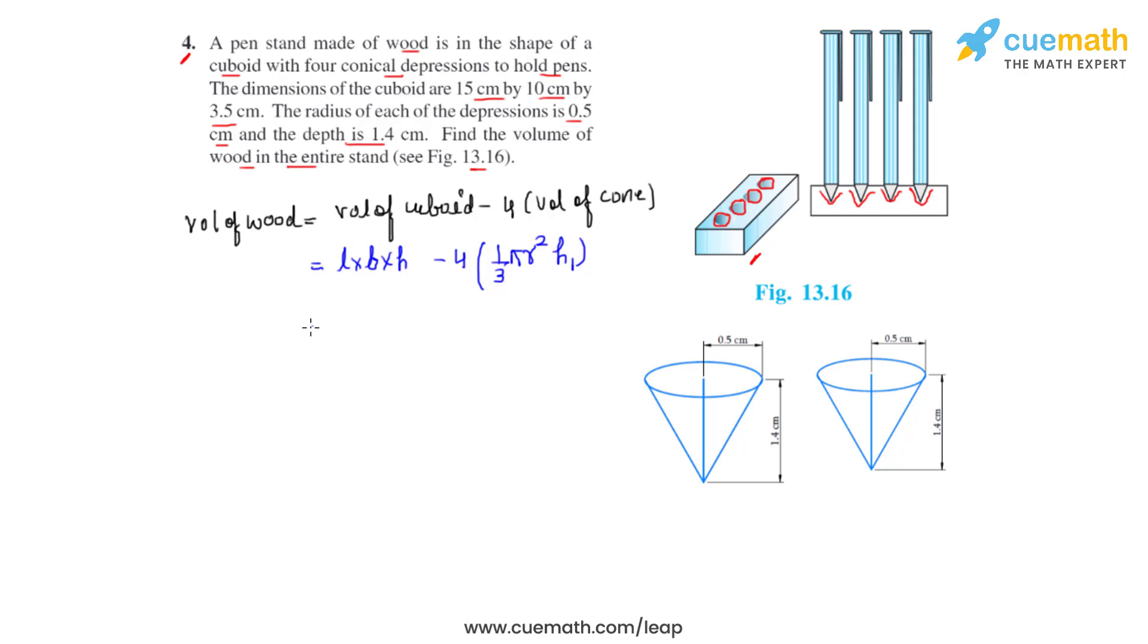We can directly substitute these values back into the formula. So first for l×b×h we substitute 15 times 10 times 3.5 minus 4 times 1/3 times 22/7 times 0.5 squared times 1.4.